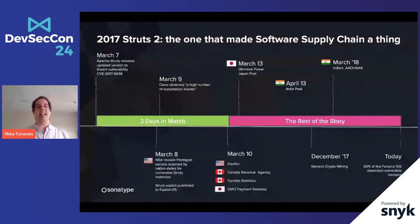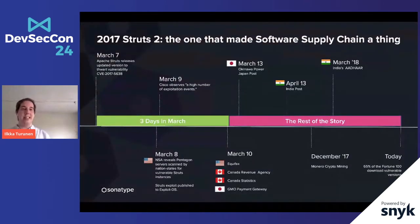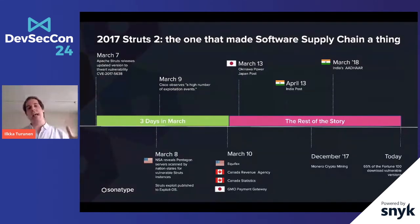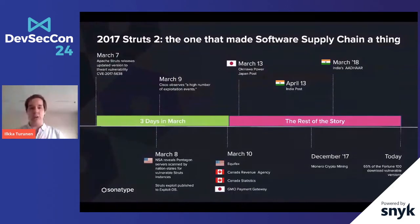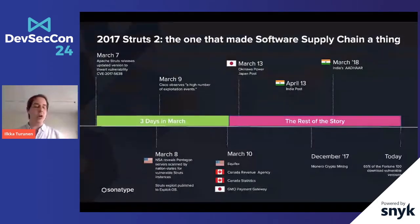Another good example is the one that really made software supply chain a thing: the 2017 Struts remote code execution vulnerability. What's interesting isn't just that there was a popular open source component with a security vulnerability — it's the timeline. On March the 7th, 2017, the Apache project logged a new security vulnerability under the Struts project, released a fixed version, and issued a notice. The very next day, the National Security Agency found that Pentagon scanners were seeing other nation states poking around the Internet for servers with this vulnerable Struts instance, trying to run exploitation code.